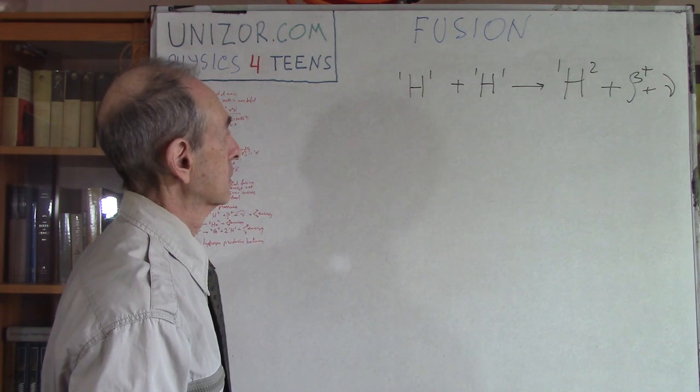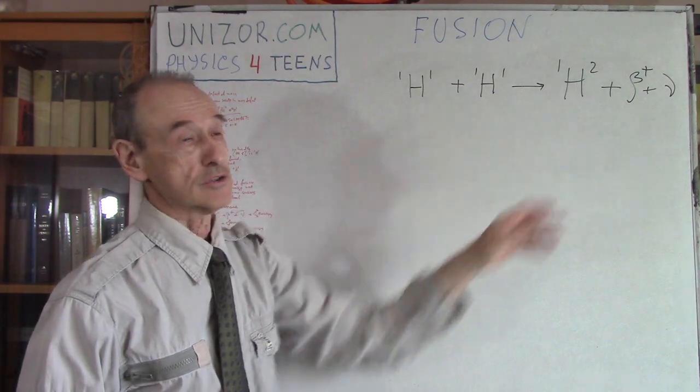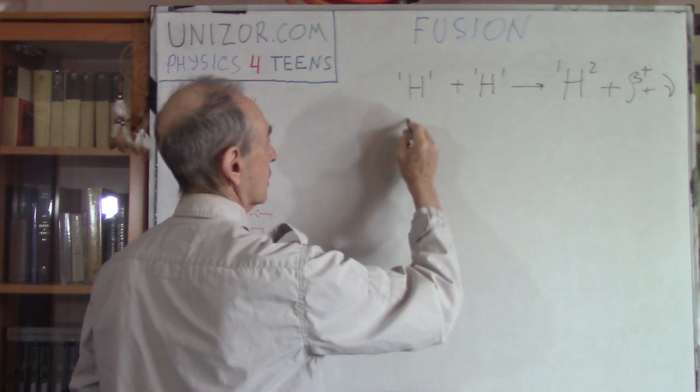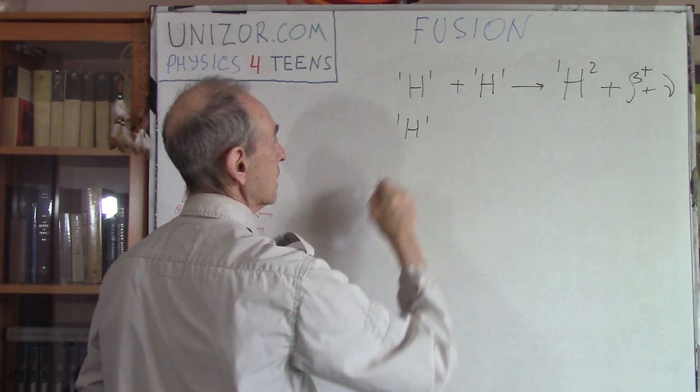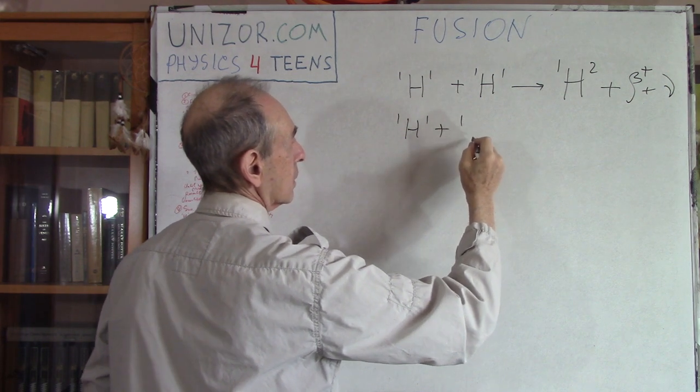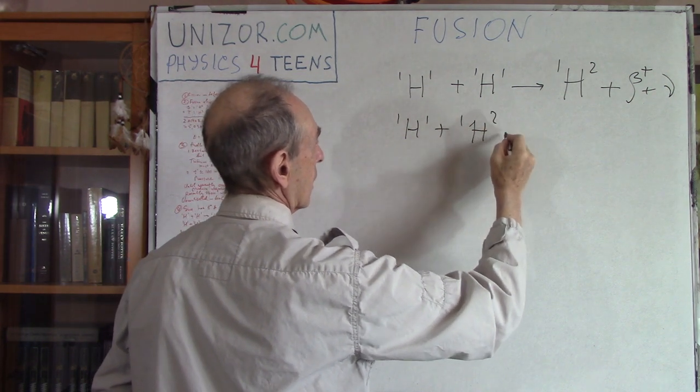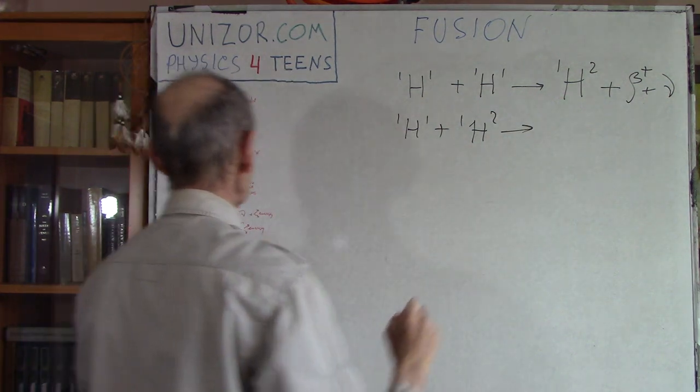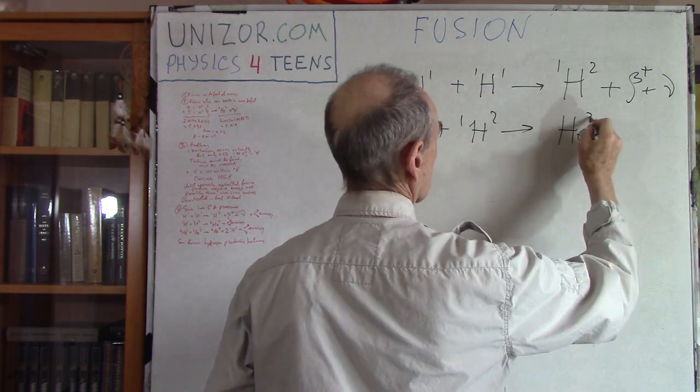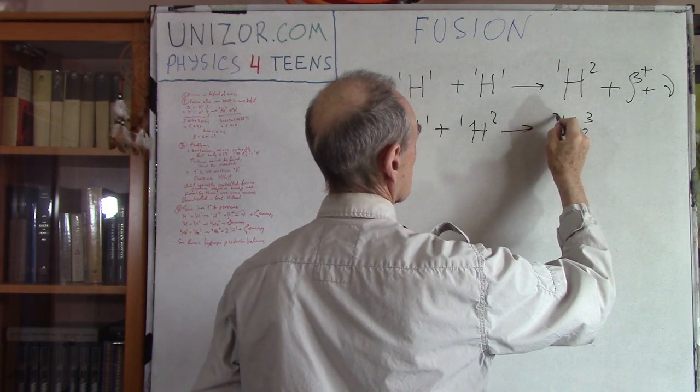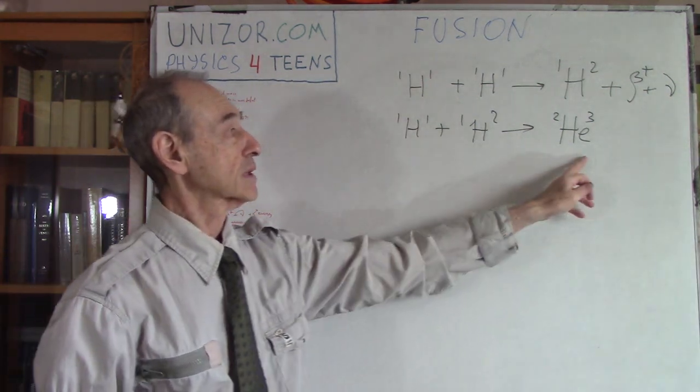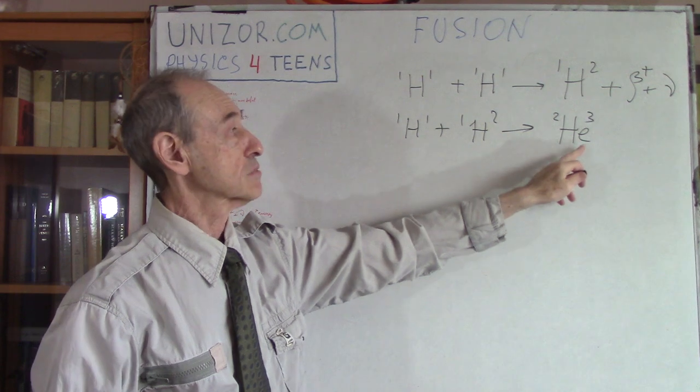That's the first reaction. Now what happens then is this deuterium is fused again with regular hydrogen, producing helium, but not just regular helium, an isotope of helium. Helium has two protons and two neutrons. This one has only one neutron, and that's why it's an isotope.